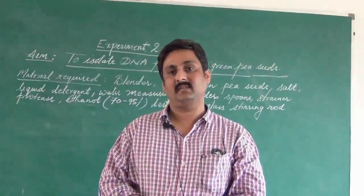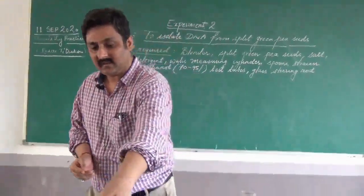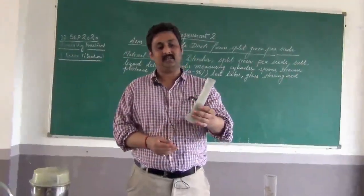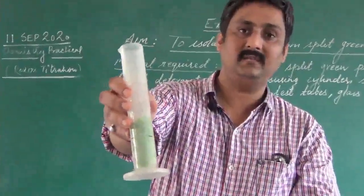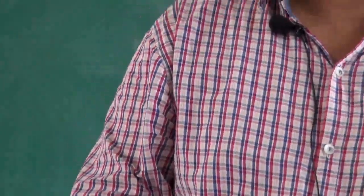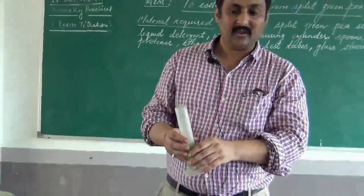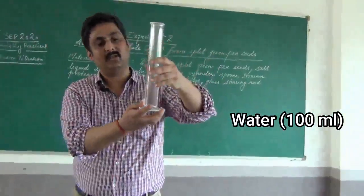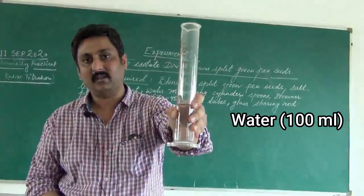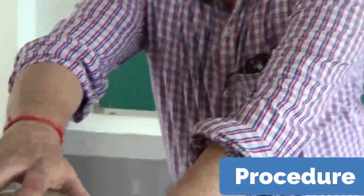Now let us start with the procedure. As you can see, these are the peas kept in a cylinder — about 50 ml. You have to take water approximately twice this level, that means about 100 ml of water. This is the distilled water which we have already taken — 100 ml.